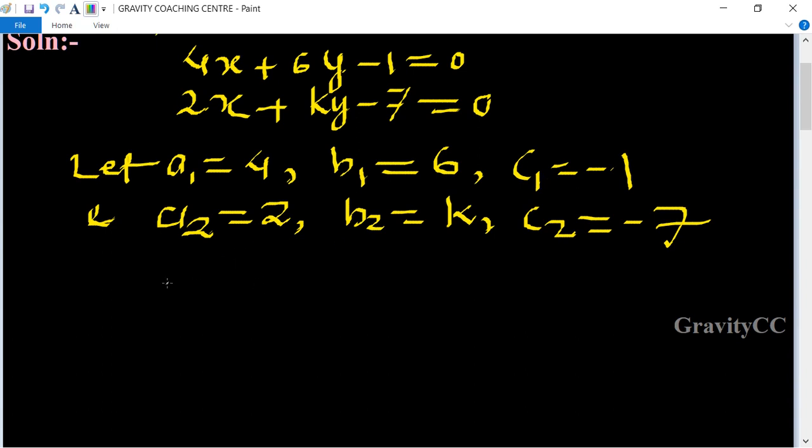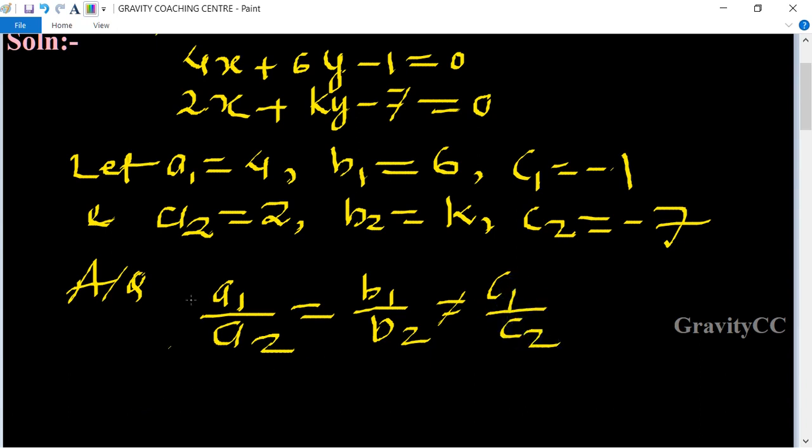According to the question, we can write a1/a2 = b1/b2 ≠ c1/c2. Now we put the values: 4/2 = 6/k ≠ -1/-7.